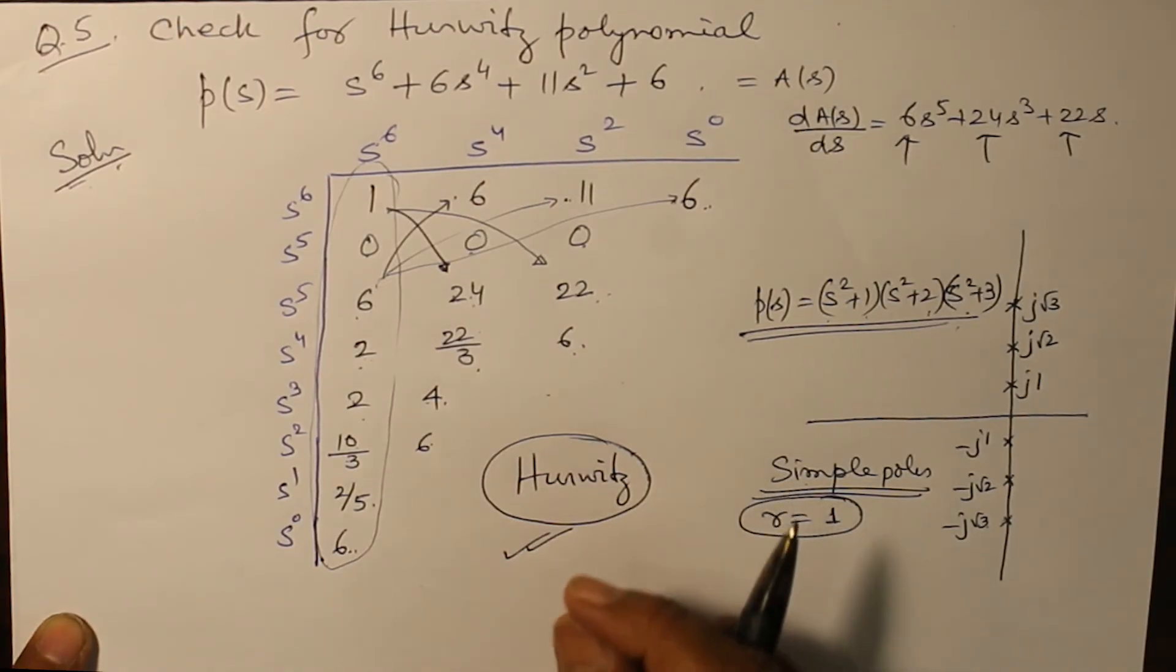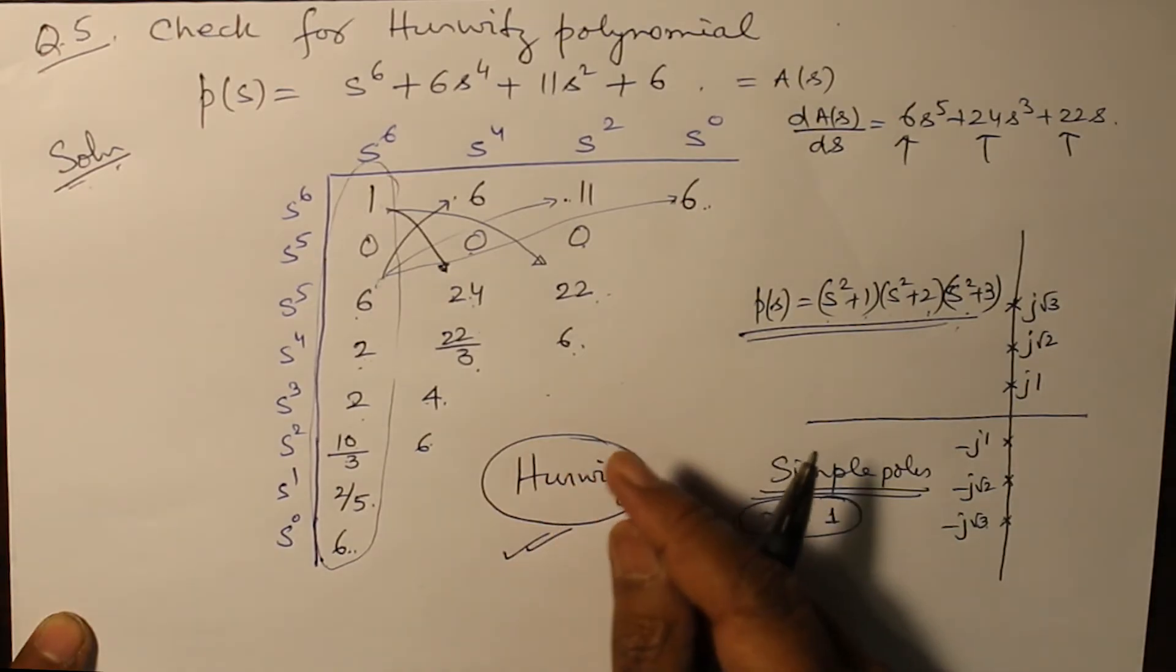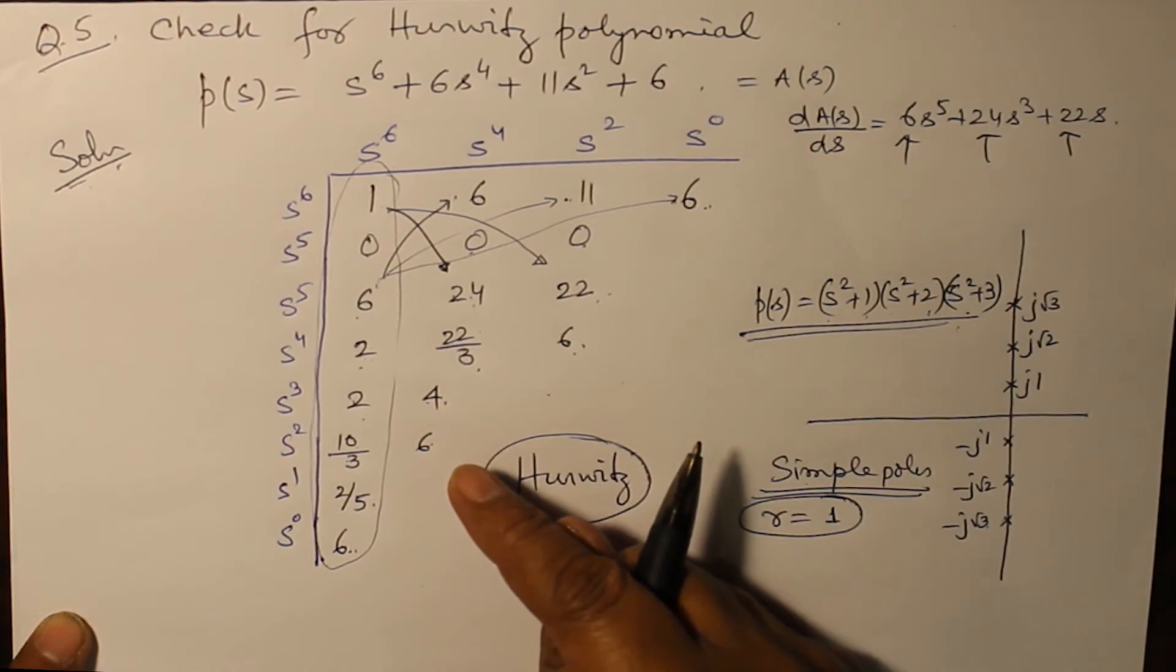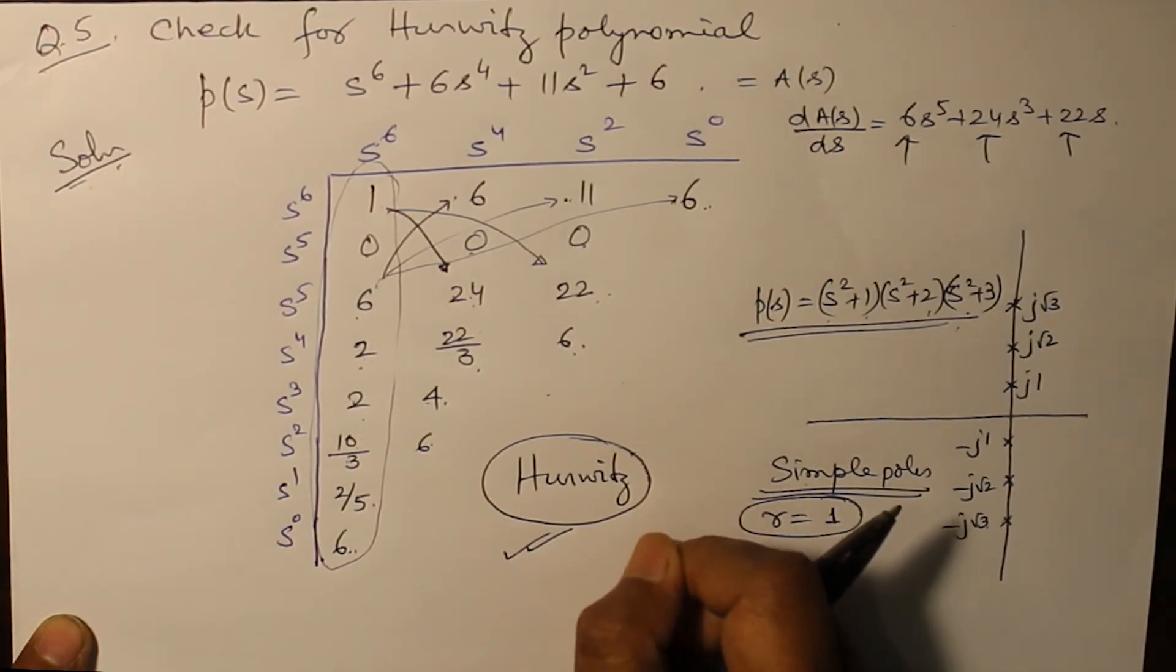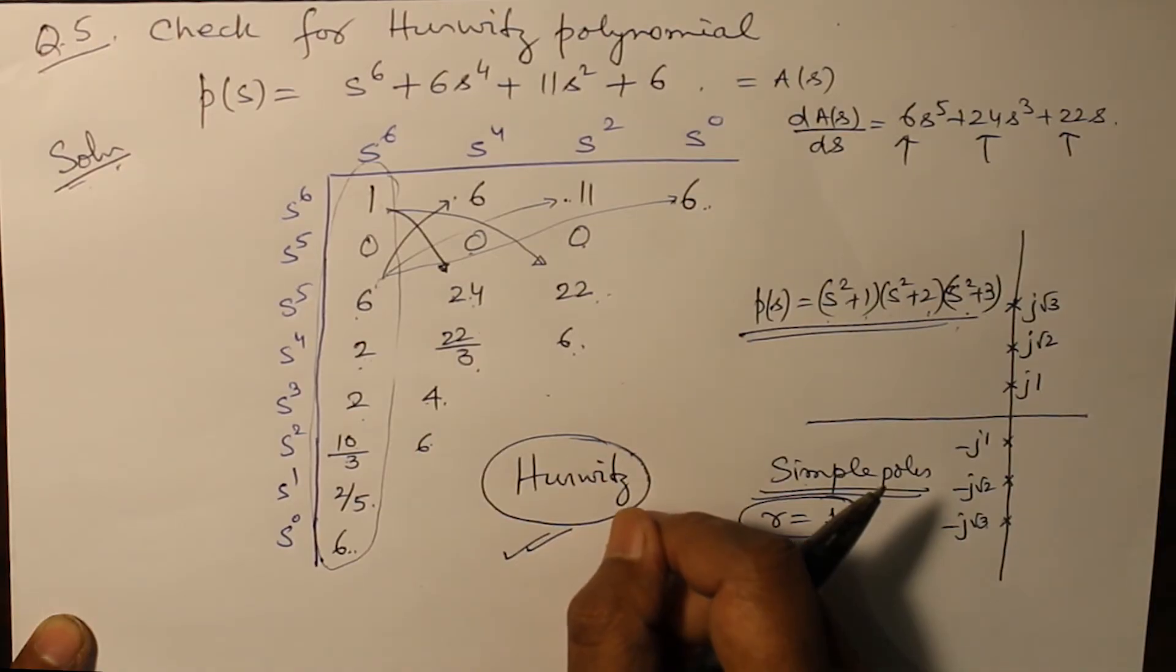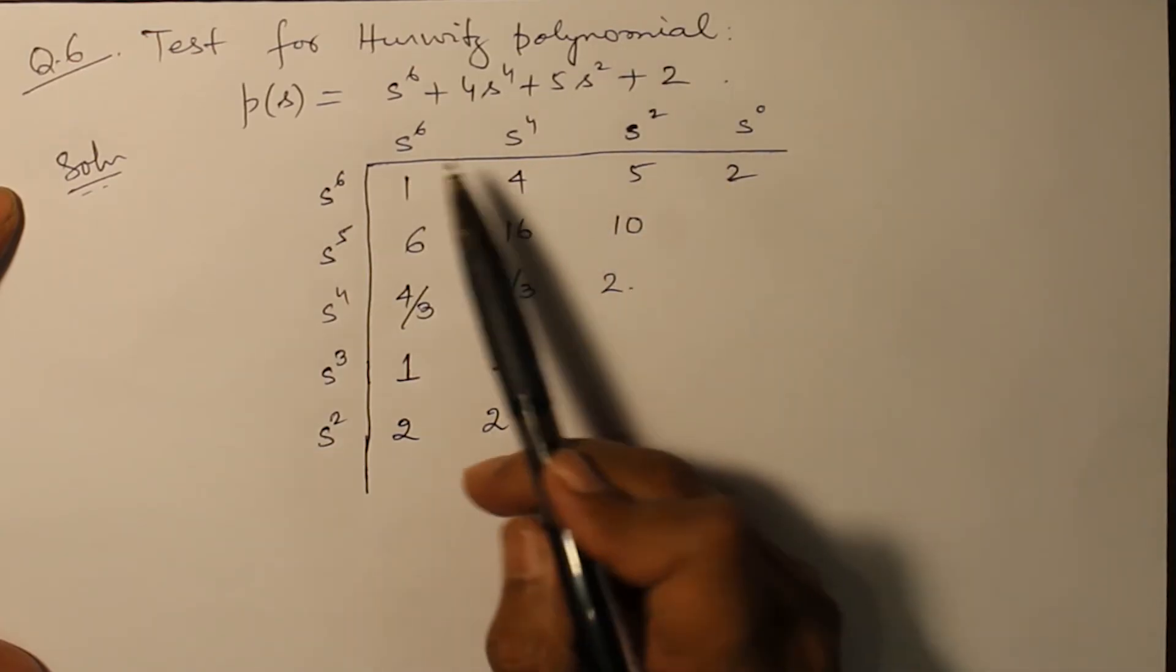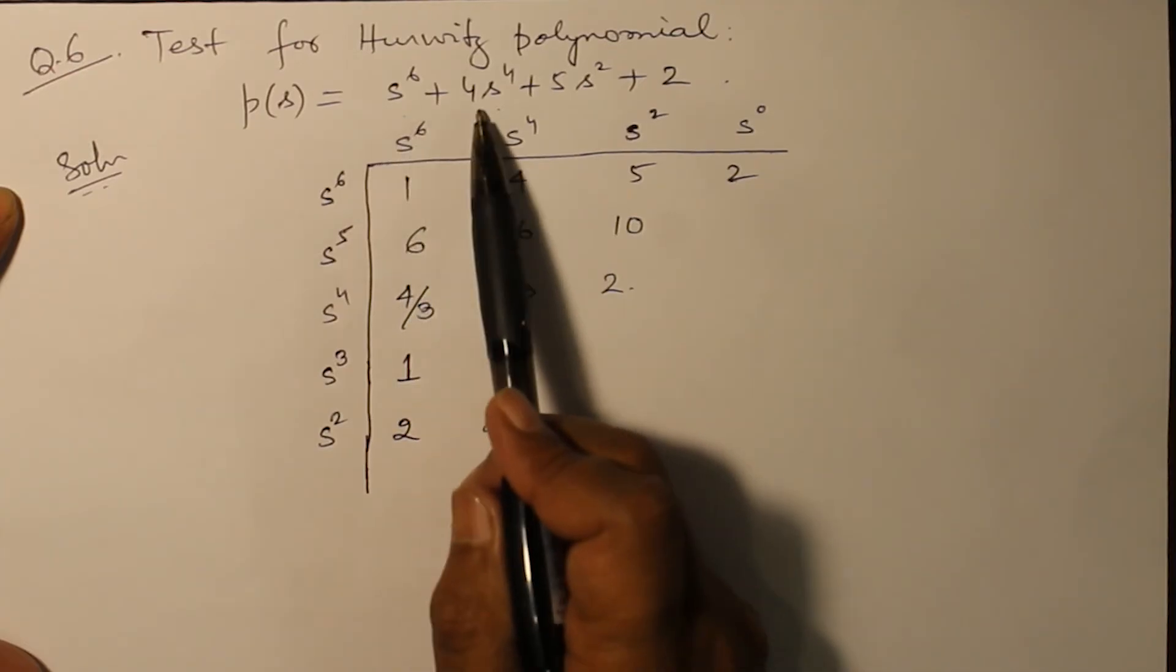So what inference have you drawn till now? A Hurwitz polynomial is one for which all the roots are either lying on the left-hand side of the s-plane or even at origin or even at j omega axis, but it should not be a repeated pole. Now the last example of this we'll see where there are repeated poles on the j omega axis and verify how it is non-Hurwitz.